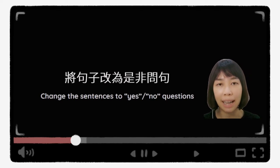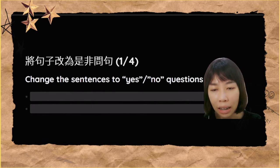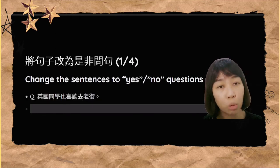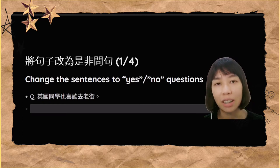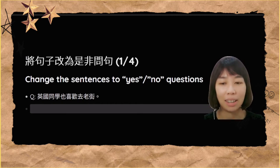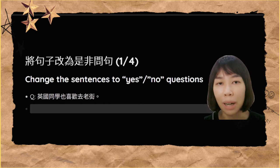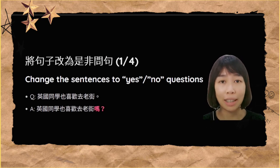第二部分要请你们把句子改成是非问句。好，第一个问题是：英国同学也喜欢去老街。还记得是非问句要在句子的最后加上一个particle吗？所以这个句子的答案应该是：英国同学也喜欢去老街吗？加上一个「吗」就是是非问句了。